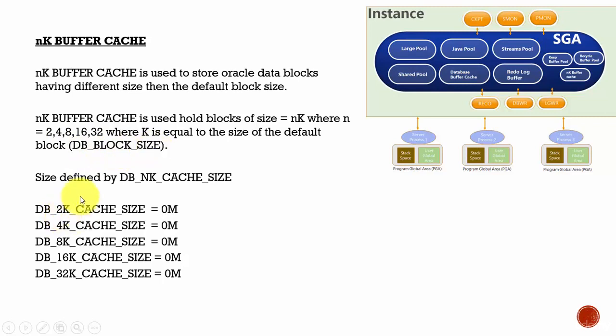If you want to create a data block which is 2 times your default block size, then you configure db_2k_cache_size and mention the memory size. By default, it is 0. If you want it to be 8 times your default size, then you configure the parameter db_8k_cache_size equal to the memory size.